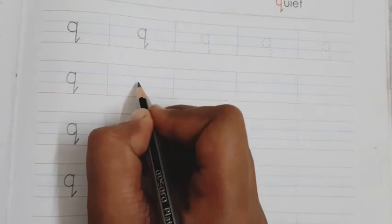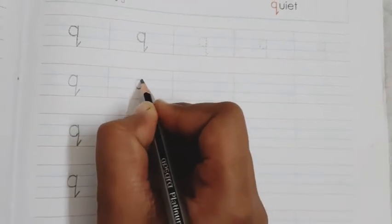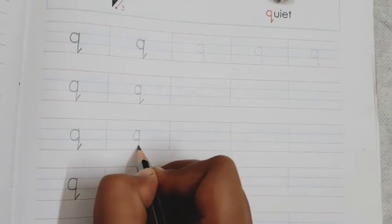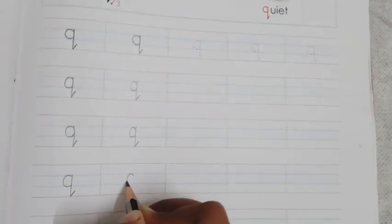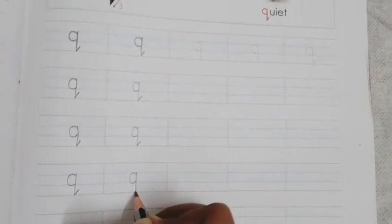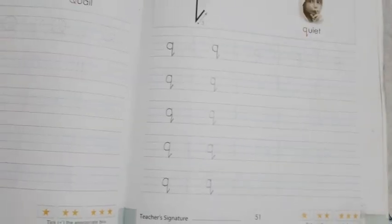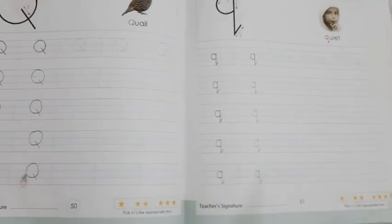Q, qua, queen. Q, qua, quilt. Q, qua, quiet. Q, qua, queen. So in this way you have to complete both the pages and submit your work on Google Classroom in PDF form.